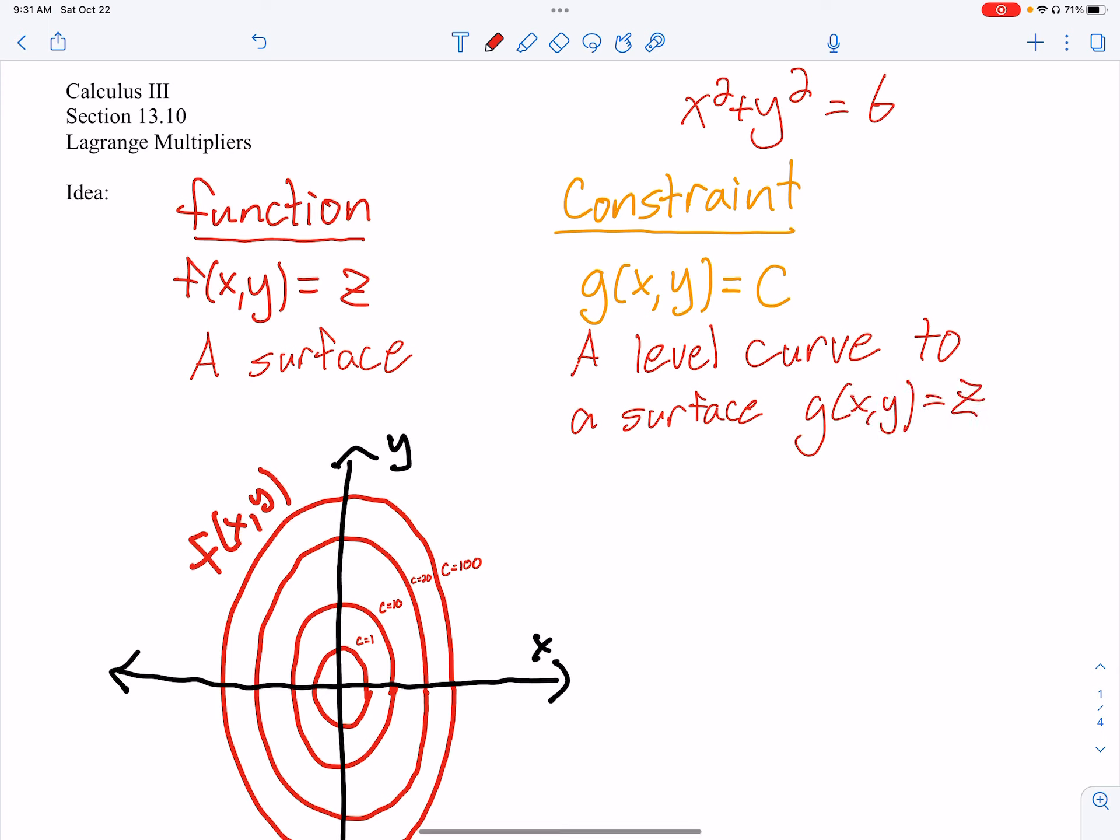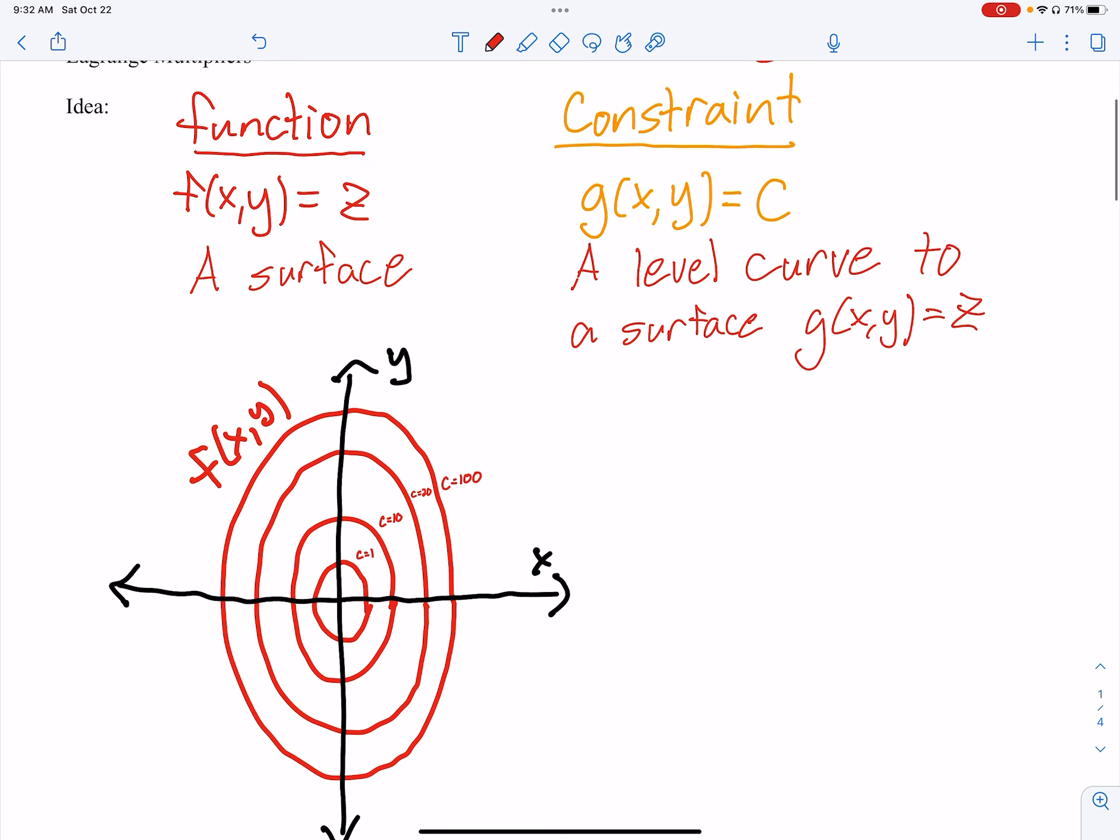Alright, so we have a function, which is our surface. I drew a contour map of just some type of function there to make sure you understand what the contour map is. We have talked about it this semester, but we have different levels there of our contour map, right, that this one looks like it's a valley, c equals 1, c equals 10, c equals 20, and c equals 100. It's going up around the sides. Or we could think about it the other way.